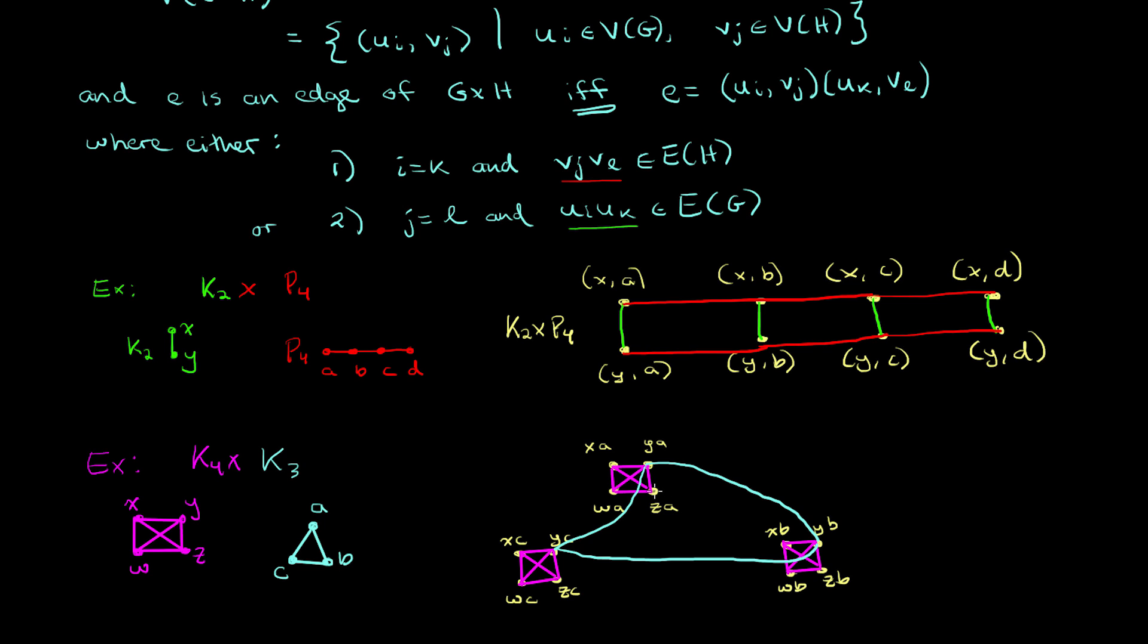Similarly, if we fix the first component of the label to be z, then we'll have this next triangle occur in our product. And if we fix our first component to be x, we'll have this purple triangle. And finally, if we fix our first component to be w, we get this red triangle. And that completes all of the edges in our product.